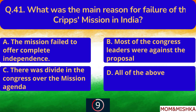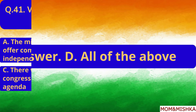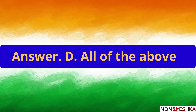What was the main reason for the failure of the Cripps Mission in India? All of the above. Option D.